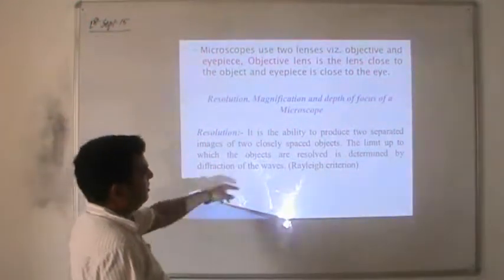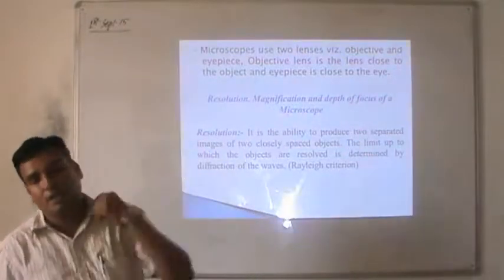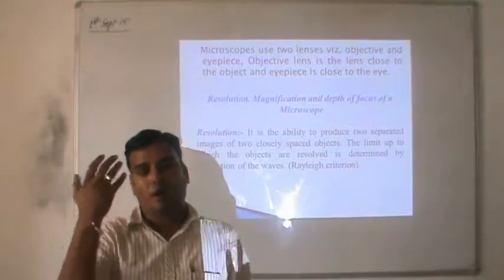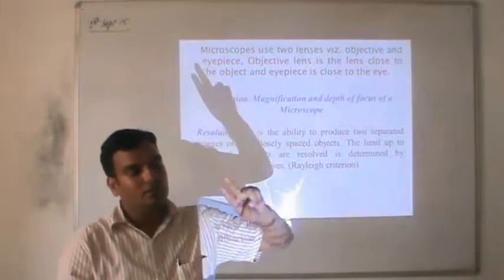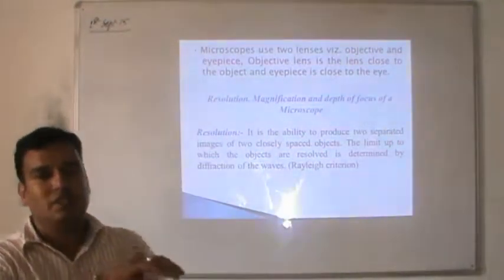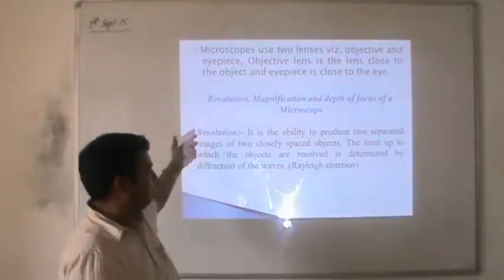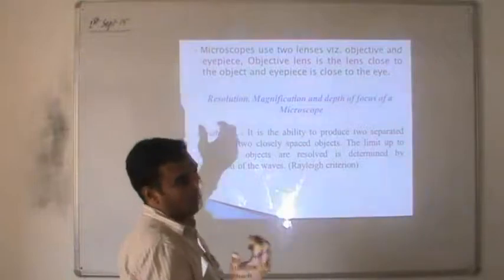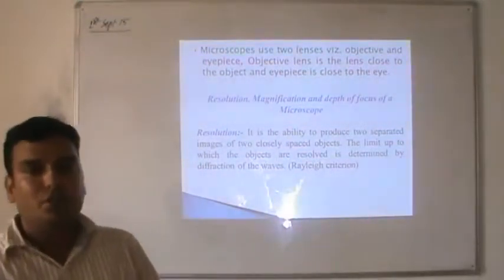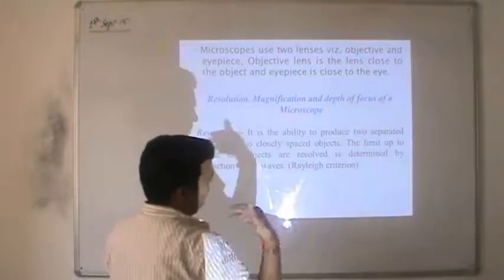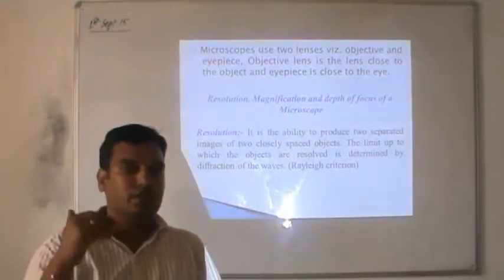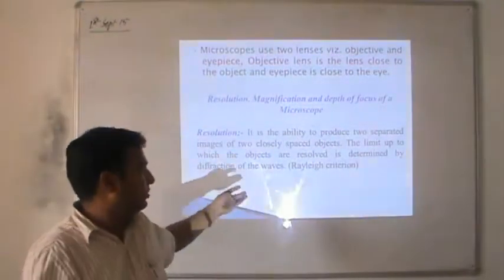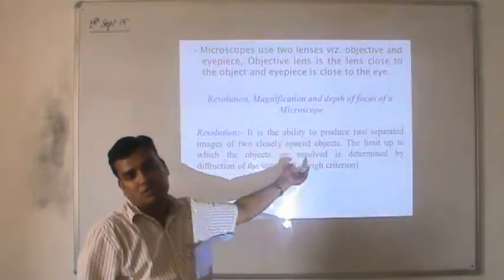Resolution gives the idea about the least distance by which two sources or objects placed very close together can be separated and resolved by an instrument. That is known as the resolution, and it is known by the Rayleigh criterion. According to Rayleigh, it is possible to resolve two wavelengths where the intensity of one is maximum and the intensity of the other is zero, and the intensity of the second is maximum. That is the best case to understand the Rayleigh criterion. Otherwise we explain the cases for well-resolved, just-resolved, and unresolved systems.